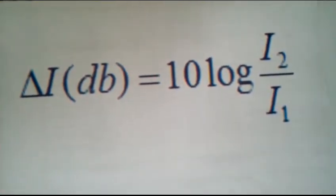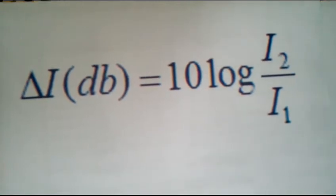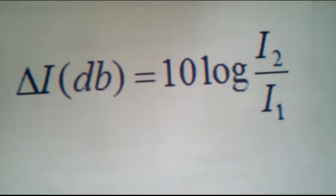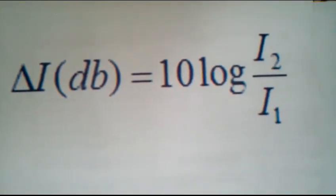The delta I represents the difference in sound intensity expressed in decibels. The two I's represent two different sound intensity measurements as they change.